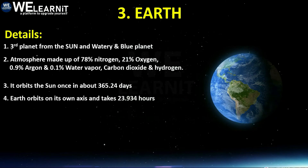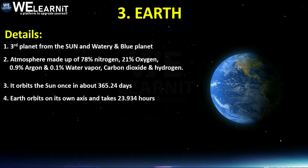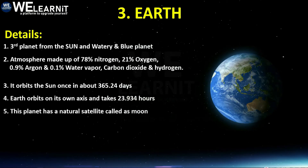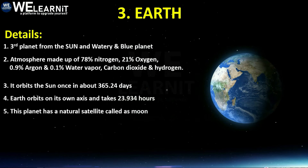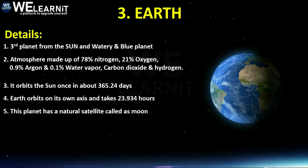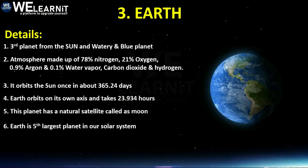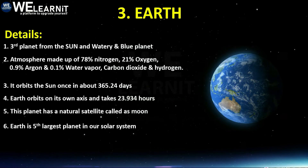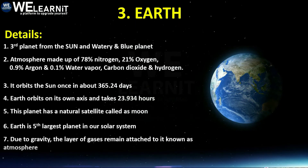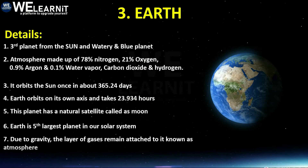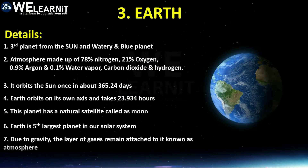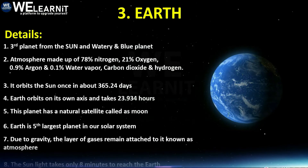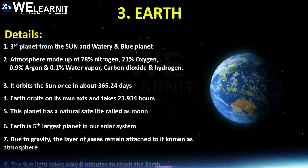Earth orbits on its own axis and takes approximately 23.934 hours — about 24 hours — that is one day. Earth has one natural satellite called the Moon and is the fifth largest planet in our solar system. Due to the gravity of our planet, layers of gases remain attached to it — that layer is known as the atmosphere. Sunlight takes only 8 minutes to reach planet Earth.